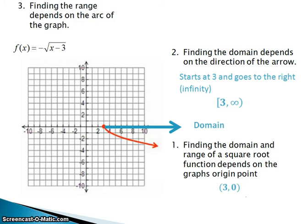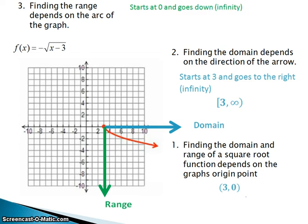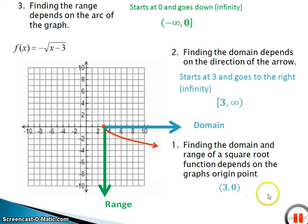Now the range depends on the arc of the graph. We can see that this graph is arcing down. Our range starts at 0 — the y-value of the origin point — and goes down to negative infinity. Domain and range are always written low to high, so since it starts at 0 and goes down, my range is written as (−∞, 0]. We put negative infinity first because it's the low value, using parentheses for infinity and a square bracket for 0 since it's included. Pause now and copy everything on this slide, including any questions you might have.